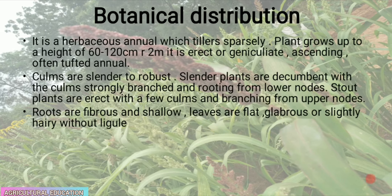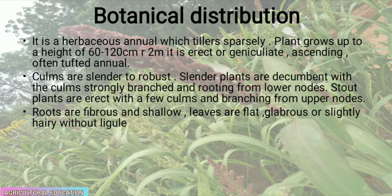Barnyard millet is a herbaceous annual which tillers profusely. The plant grows up to a height of 60 to 120 centimeters or two meters. It is erect or geniculate ascending, often tufted. Annual clumps are slender to robust. Slender plants are decumbent with clumps strongly branched and rooting from lower nodes; stout plants are erect with a few clumps and branching from upper nodes. Roots are fibrous and shallow; leaves are flat, glabrous or slightly hairy, without ligule.